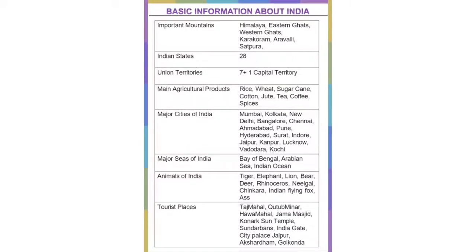Main agricultural products are rice, wheat, sugarcane, tea, coffee, jute, cotton, and spices. Major cities of India are Mumbai, Kolkata, New Delhi, Bangalore, Chennai, Ahmedabad, Hyderabad, Surat, and various others.